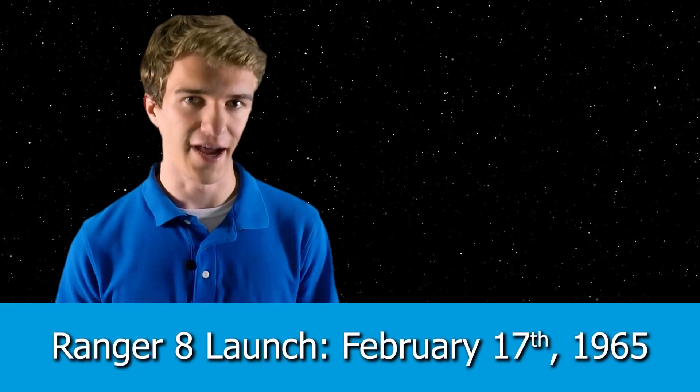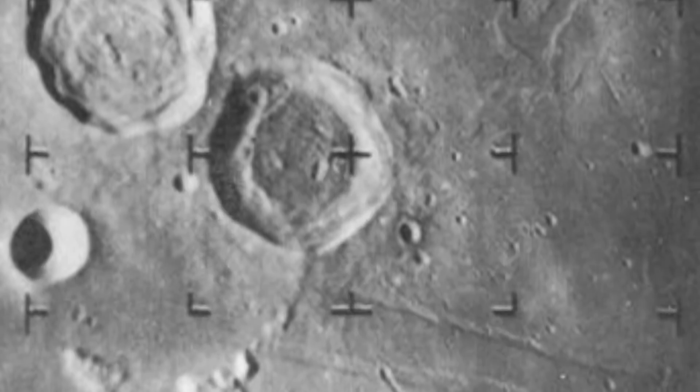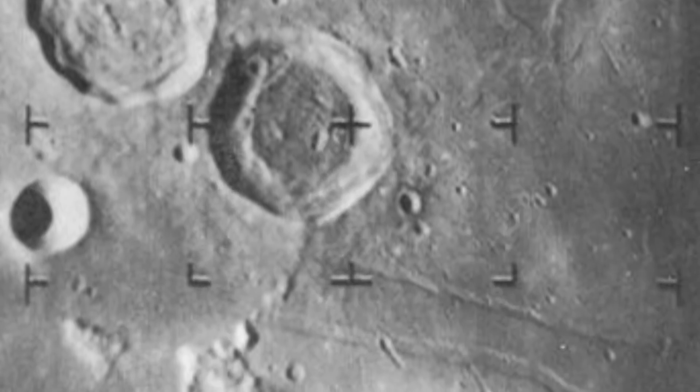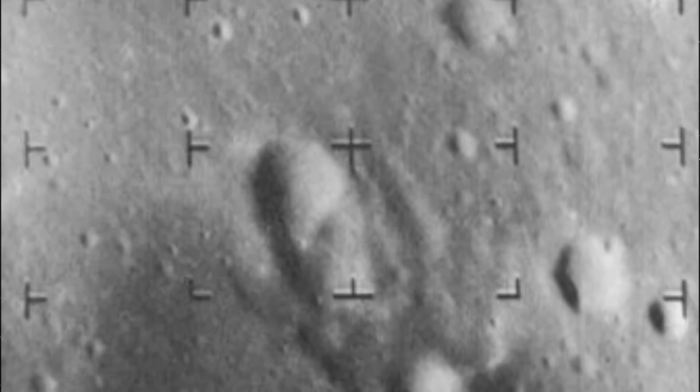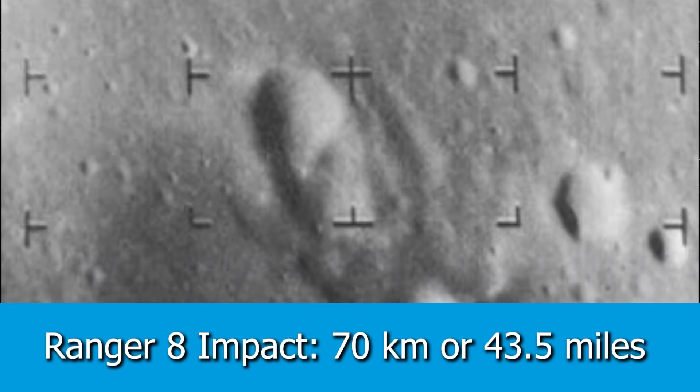Following this, about seven months later, on February 17th of 1965, Ranger 8 would launch, and it would be aiming again for the Sea of Tranquility. It too was a major success. It received many images as it approached the Sea of Tranquility, and in fact, ended up landing just 70 kilometers away from where the Apollo 11 landing site would land just four and a half years after this impact.